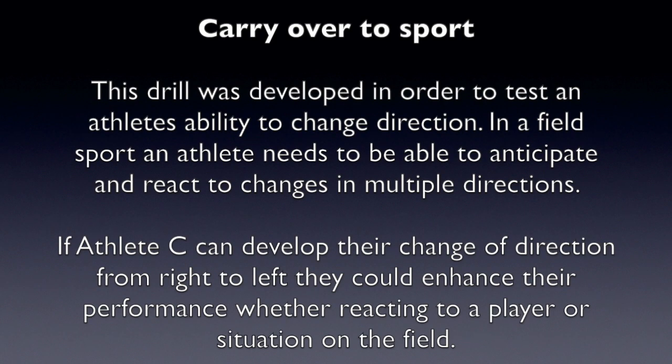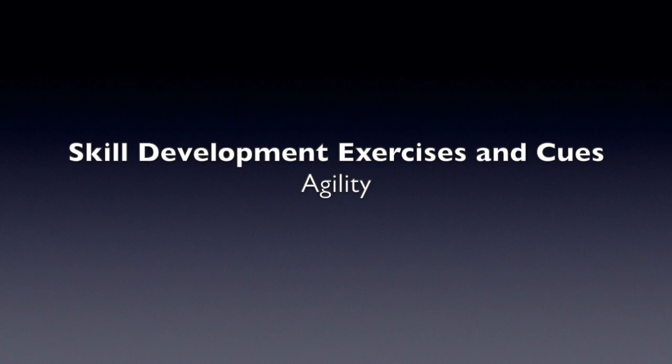In field sports, it is important to be able to react and change direction efficiently. This may therefore hinder Athlete C's ability to perform optimally in a situation which requires a quick change of direction off the right leg. With practice and repetition of the skill and corrective exercises, Athlete C will develop the ability to change direction on his right hand side.